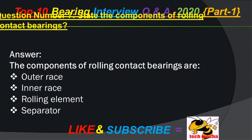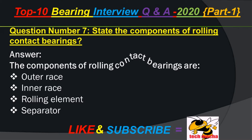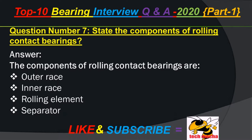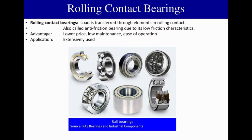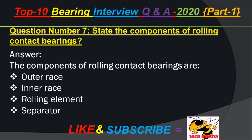Question number 7: State the components of rolling contact bearings. Answer: The components of rolling contact bearings are outer race, inner race, rolling element, and separator.